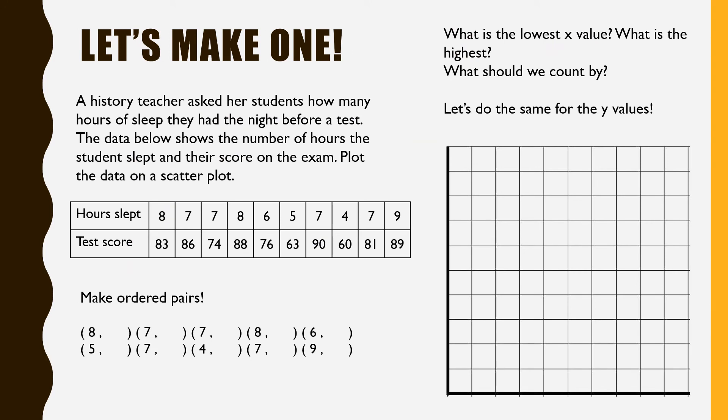So finally, let's try this one. Let's make one. A history teacher asked her students how many hours of sleep they had the night before a test. The data below shows the number of hours the students slept and their score on the exam. Plot the data on the scatter plot. So here we're looking for the correlation or the relationship between how many hours of sleep you get before a test and your score on the test. So down here across the bottom, we'll have hours of sleep. That's my x axis. Over here, my test score. That would be my y axis.